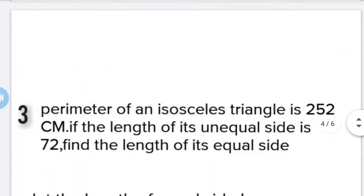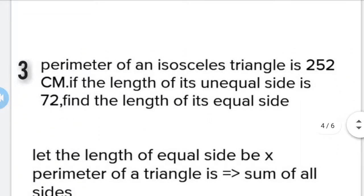Question number 3: The perimeter of an isosceles triangle is 252 cm. If the length of its unequal side is 72 cm, find the length of its equal sides.